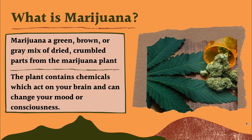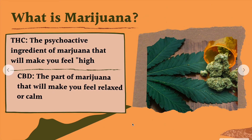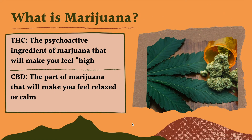The marijuana plant contains a lot of different chemicals, and these chemicals act on your brain and can change your mood or your state of consciousness. That's what makes marijuana a drug — because it changes the way your brain thinks for a temporary amount of time. That is why people use marijuana: it sort of changes the way it makes them feel.